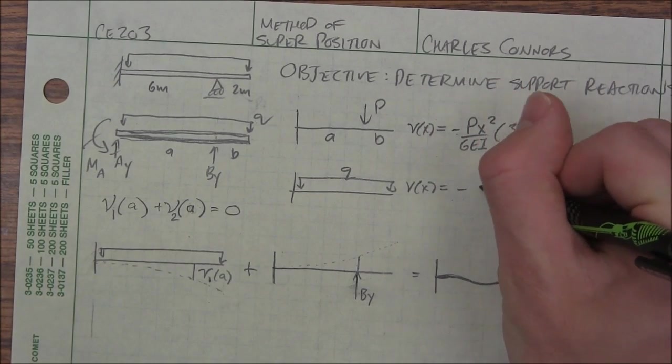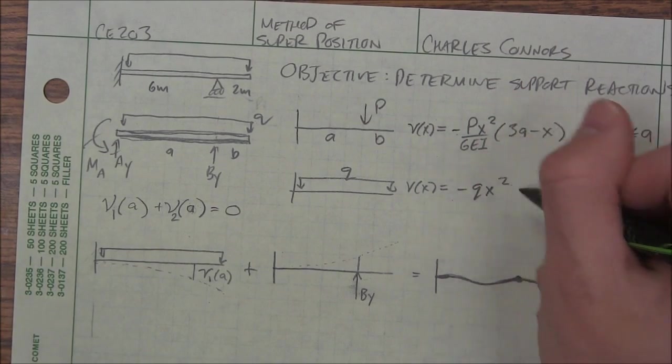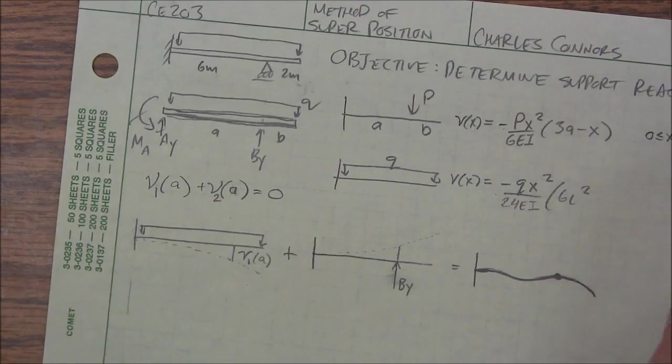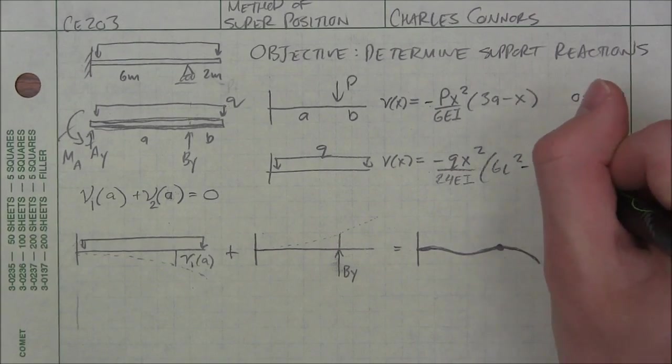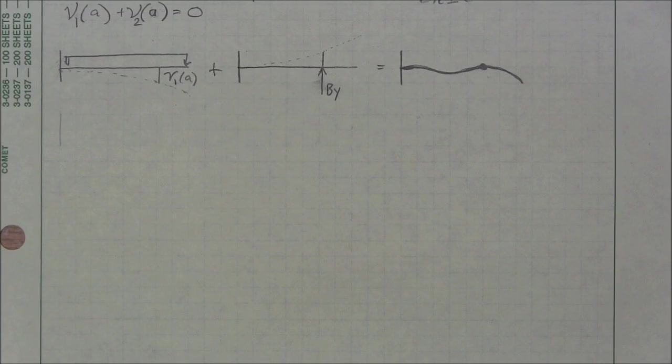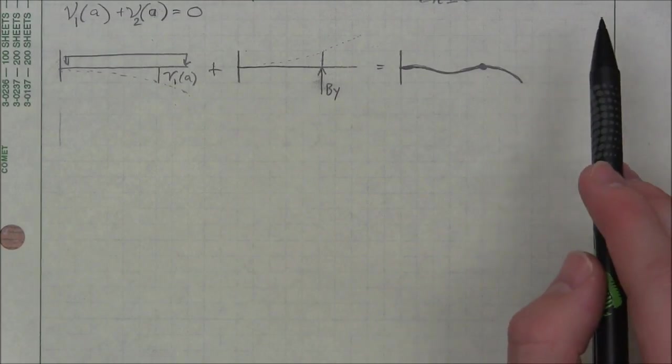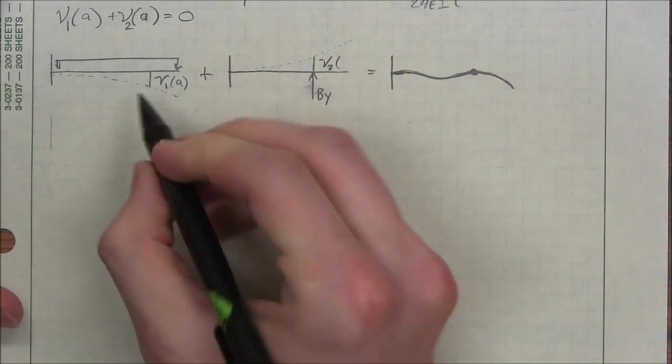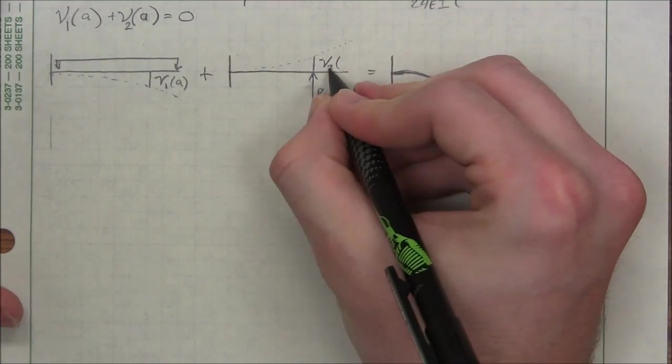We have negative Q X squared, 24EI, 6L squared minus 4LX plus X squared. And that applies to the whole entire beam. So since I want to know my V1 of A and V2 of A,